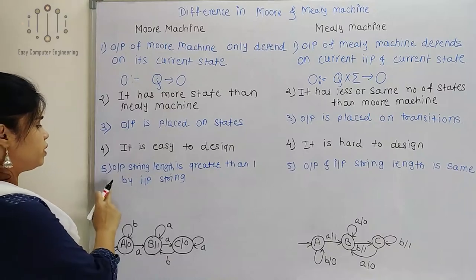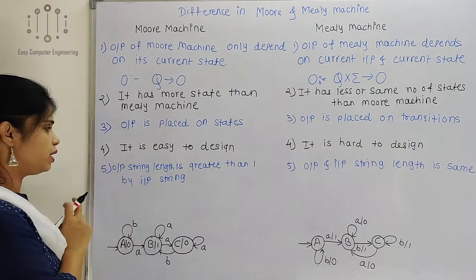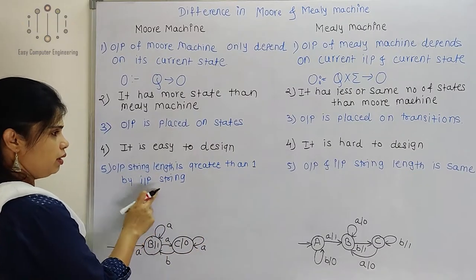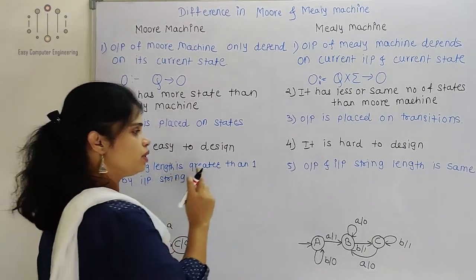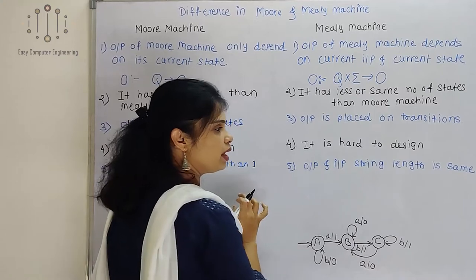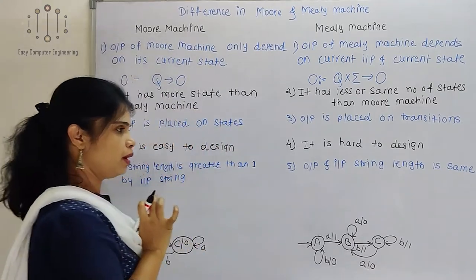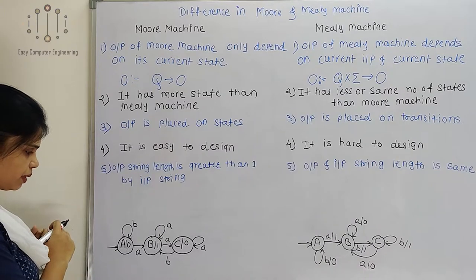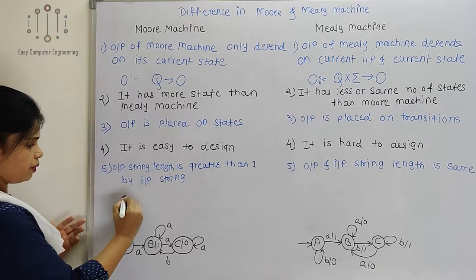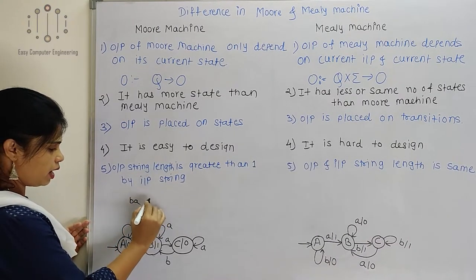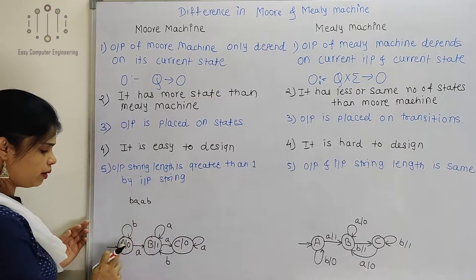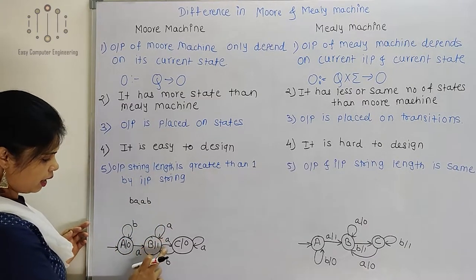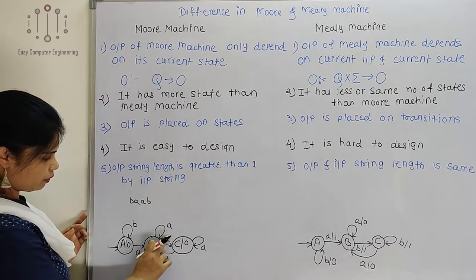Now this is the next difference. Output string length is greater than input string length by 1 in Moore machine, whereas in Mealy machine, output and input string length is the same. Let us consider this example with string B, A, A, B.